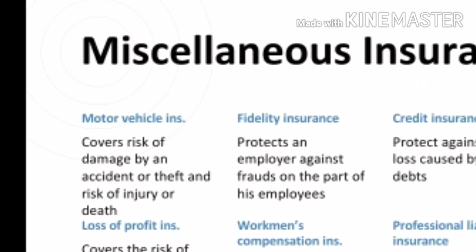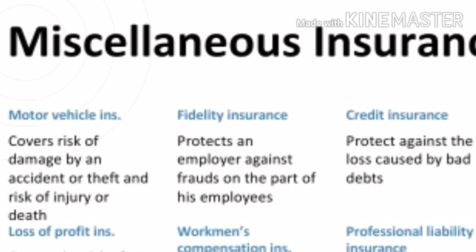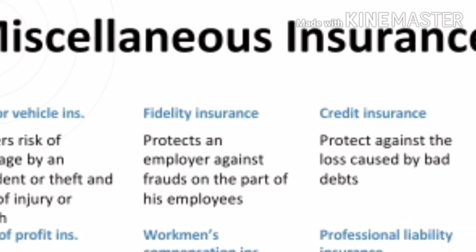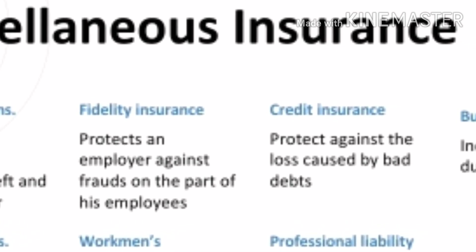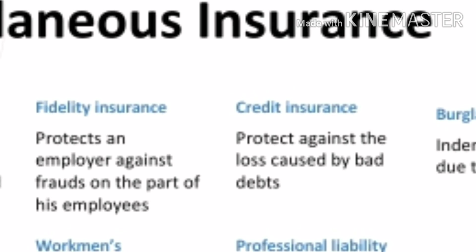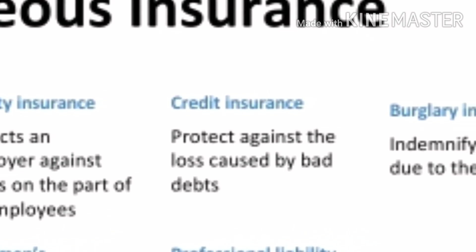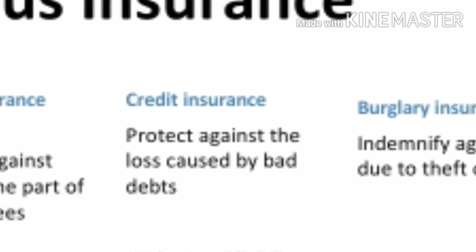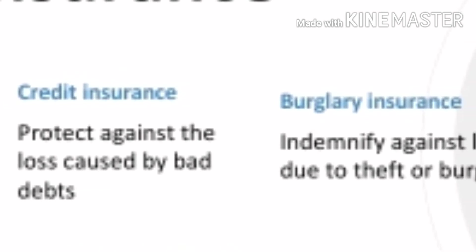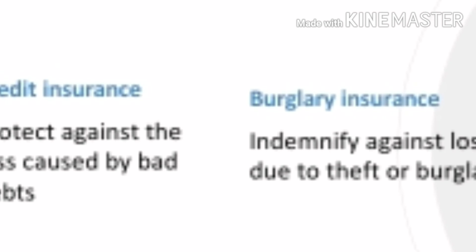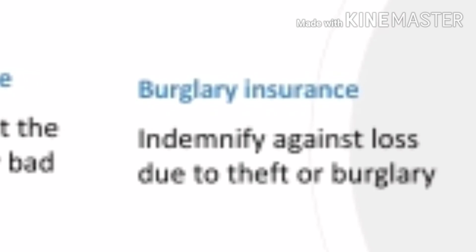Next we can discuss about miscellaneous insurances. The first one is motor vehicle insurance. It covers two types of risk: first, the risk of damage to the vehicle due to accident, and second, the risk of injury or death to the passenger. The second one is fidelity insurance — it protects an employer against fraud on the part of his employees and its consequential risk. Another is credit insurance — it protects against the loss caused by bad debt due to insolvency of the customers. Next is burglary insurance, which indemnifies against the loss due to theft or burglary.